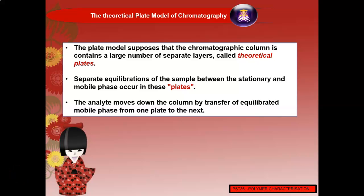We proceed with the theoretical plate model of chromatography. The plate model supposes that the chromatographic column contains a large number of separate layers called theoretical plates, given the symbol n. It is an index that indicates column efficiency and describes the number of plates as defined according to plate theory, and can be used to determine column efficiency — the larger the theoretical plate number, the sharper the peaks.